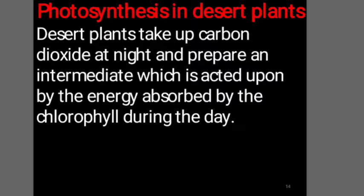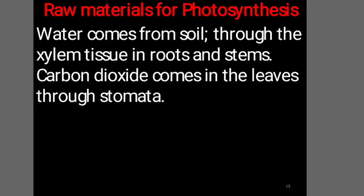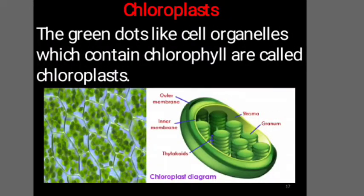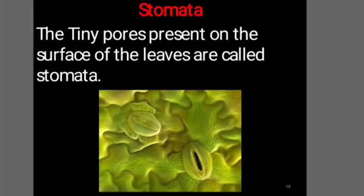How is photosynthesis taking place in desert plants? Desert plants take up carbon dioxide at night and prepare an intermediate which is acted upon by the energy absorbed by the chlorophyll during the day. What are the raw materials for photosynthesis? Water comes from soil through the xylem tissue in roots and stems. Carbon dioxide comes into the leaves through stomata. Looking at the cross section of a leaf lamina, you can see chloroplasts — green dot-like cell organelles which contain chlorophyll — and stomata, the tiny pores present on the surface of the leaves.